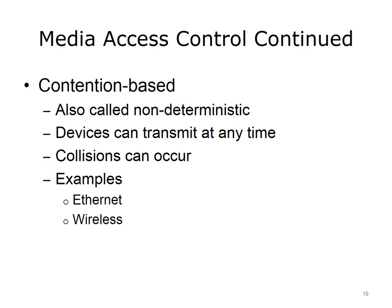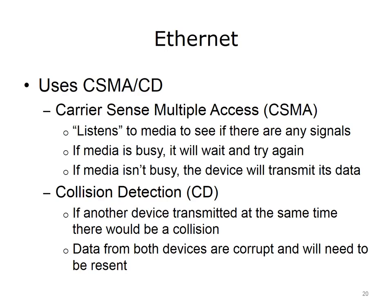The MAC sublayer determines how data frames are placed onto the network media — which device gets to talk. The two MAC methods for allowing access to shared media are controlled and contention-based. Controlled access, also called deterministic access, uses a mechanism that determines when a device can transmit, so each device waits its turn. Only one device communicates at a time, meaning there are no collisions. Collisions occur when multiple data transmissions interfere with each other, causing none to be valid. Token Ring and FDDI are technologies that use controlled access.